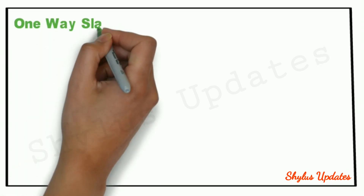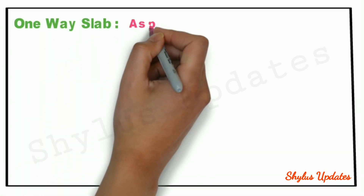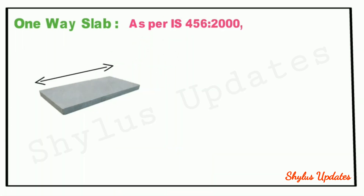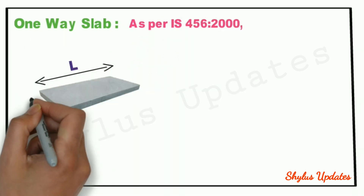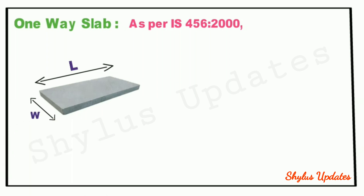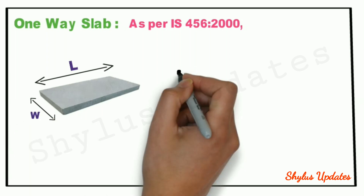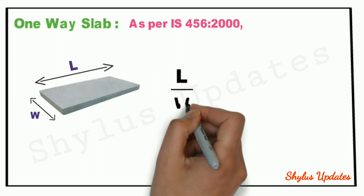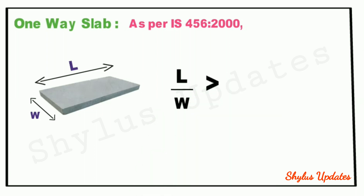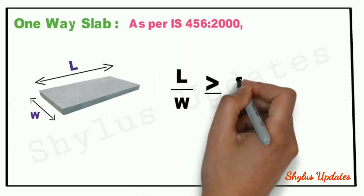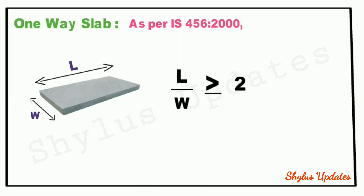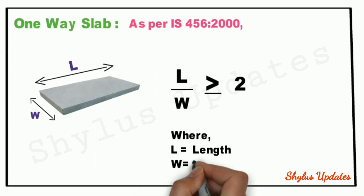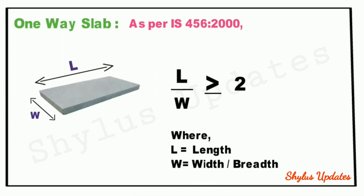1-way slab: As per IS-456-2000 codebook, the ratio of longer span to shorter span should be equal to or greater than 2. That is, L divided by W should be greater than or equal to 2, where L is the length and W is the width or breadth.